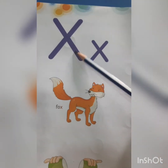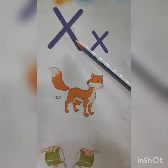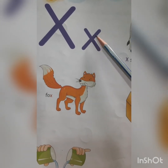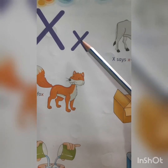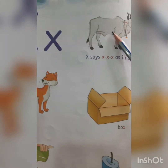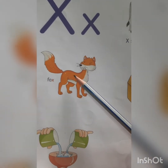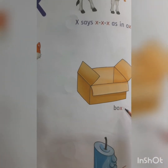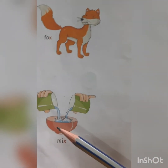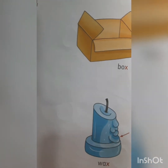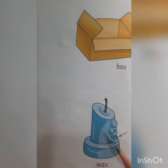Let's see the next letter — which letter is this children? This is letter X. Capital X and small x. What is the sound of letter X? It's 'X' in ox. O-X. Ox. F-O-X. Fox. B-O-X. Box. M-I-X. Mix. W-A-X. Wax.